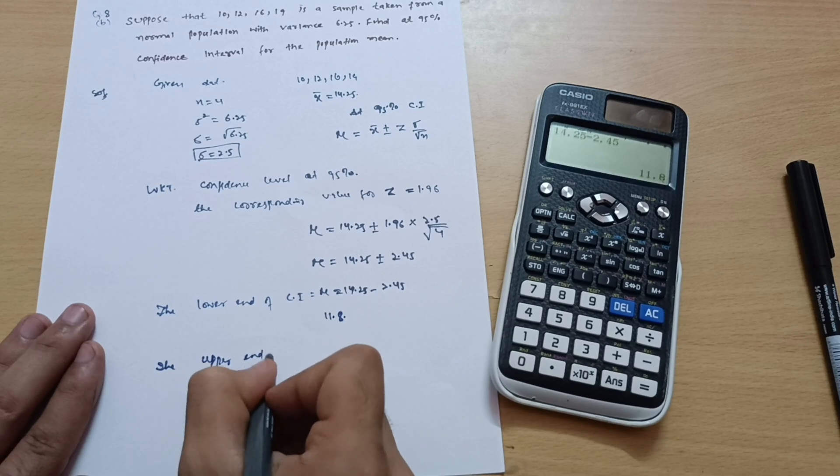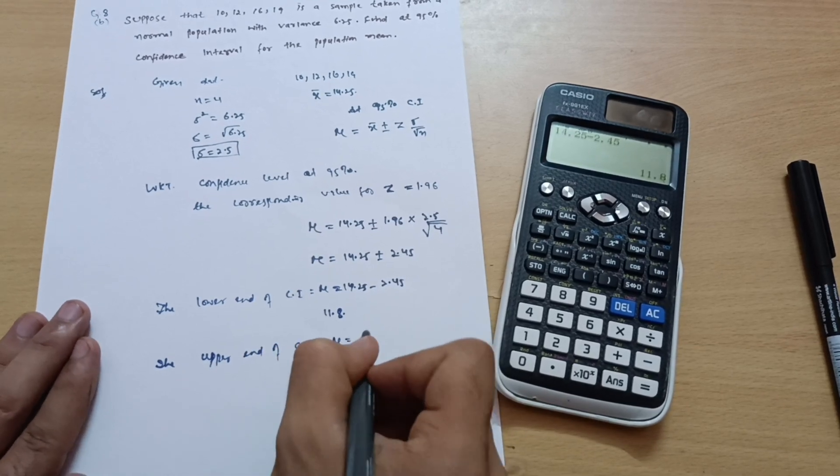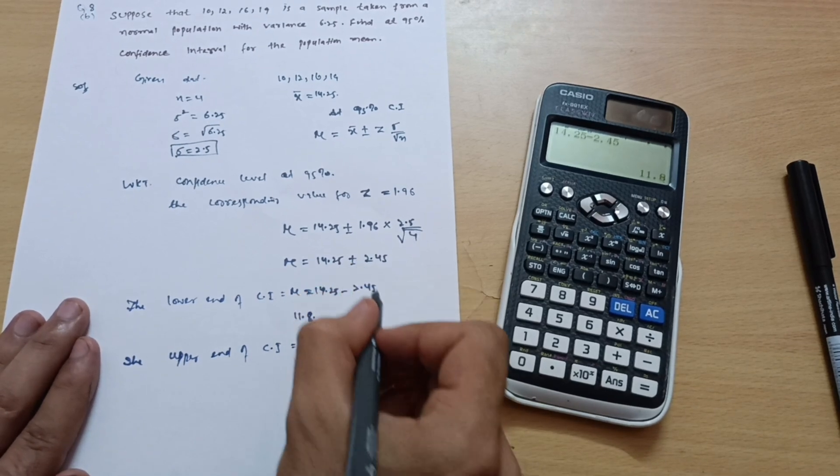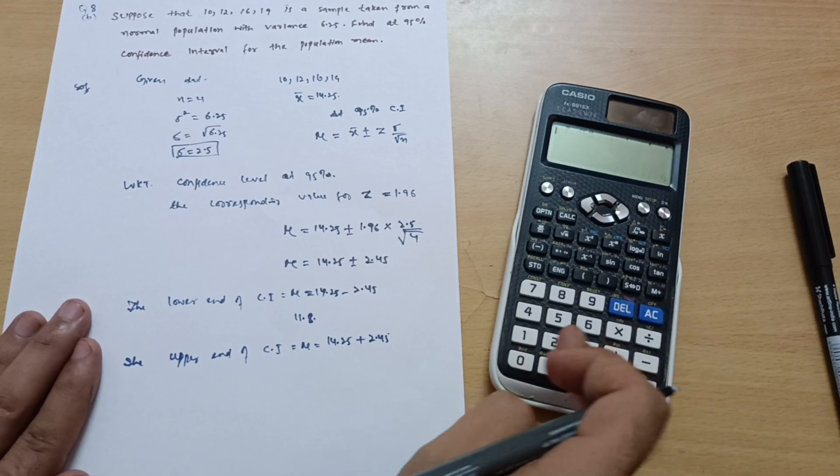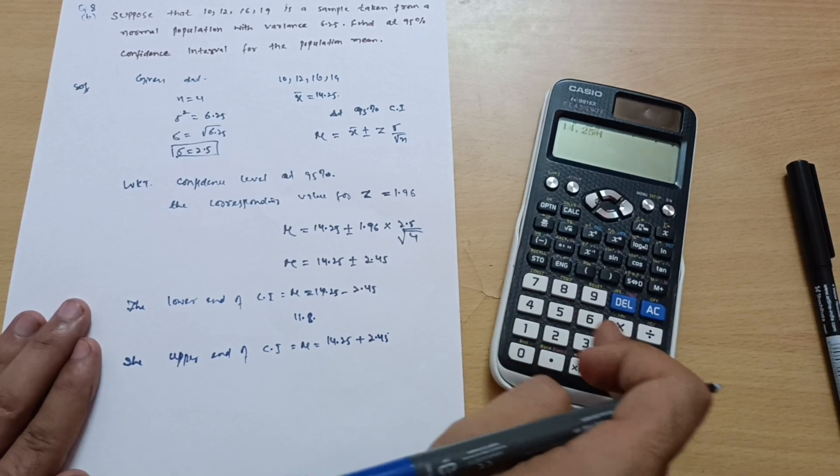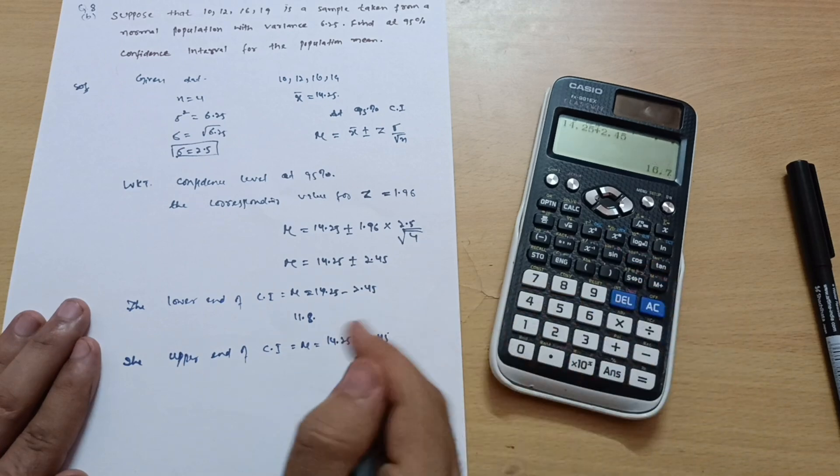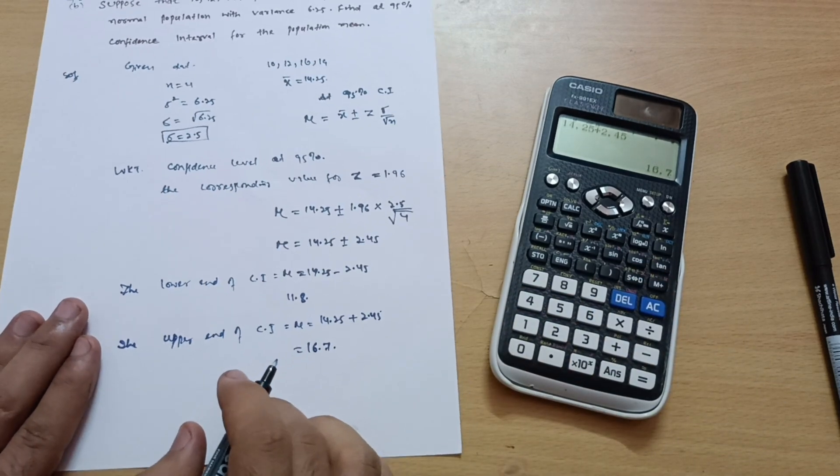Upper end of confidence interval is equal to mu is equal to 14.25 plus, now you have to take plus value, positive value, plus 2.45.